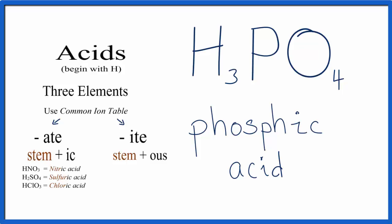We do need to make one small change. Phosphorus is an exception, so we need to leave the O-R in the name. That leaves us with phosphoric acid as the name for H3PO4.